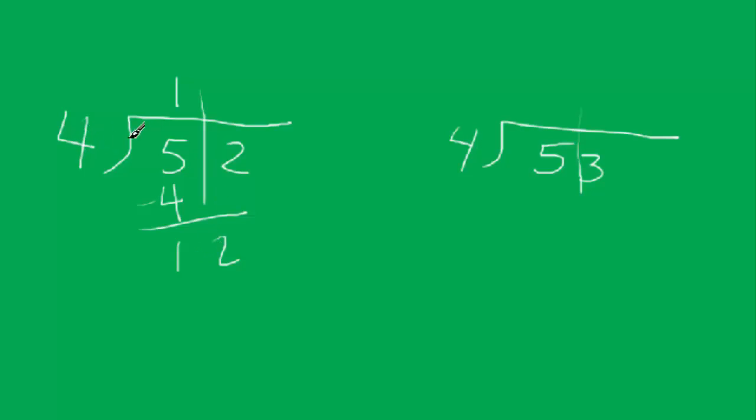So 4 into 12, how many times? It goes into it 3 times. Now this is a nice whole number because 4 times 3 equals 12. If I subtract those two, I have no remainder, so the answer is 13.